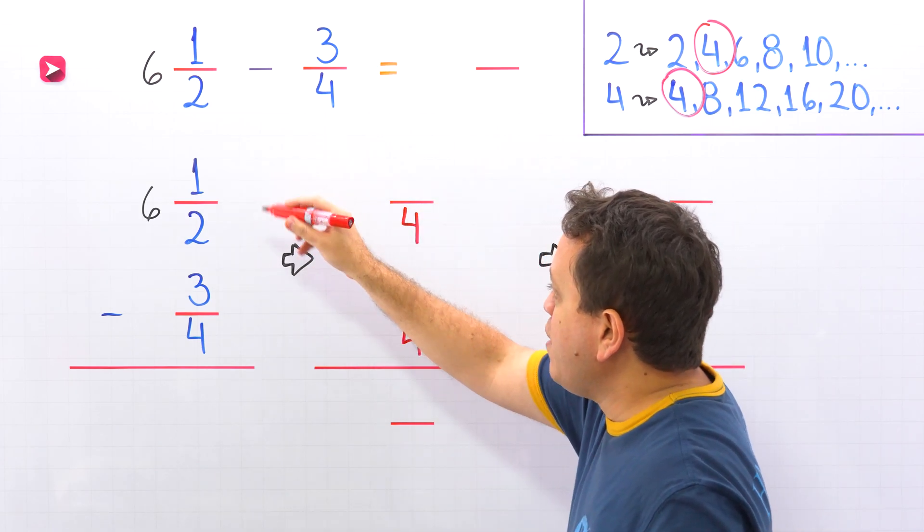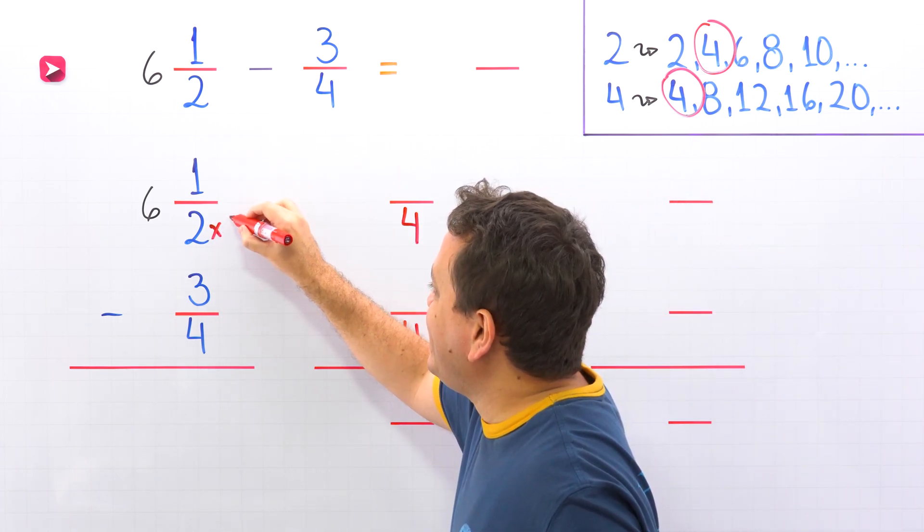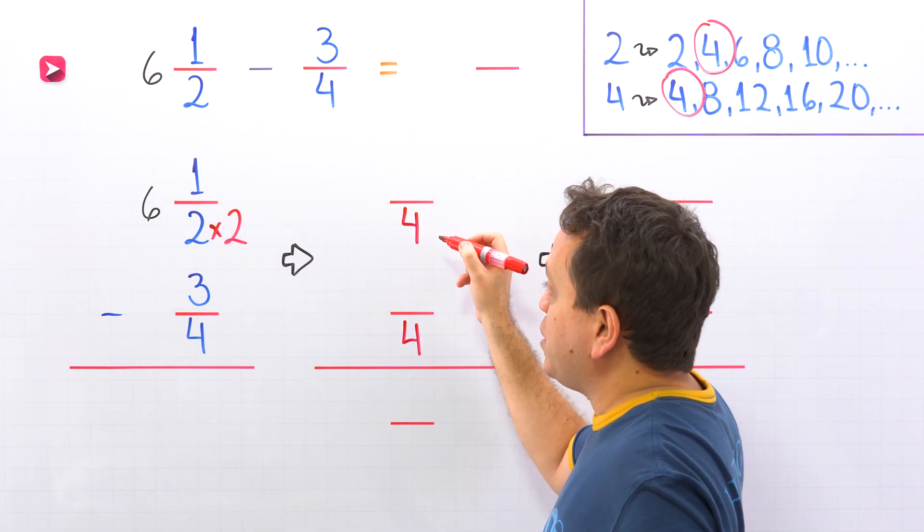Let's start with 1/2. By what number should we multiply 2 to get 4? By 2, that is correct, because 2 times 2 give us 4.